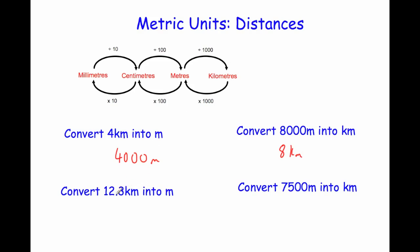Convert 12.3 kilometers into meters. We're going to times by 1000. So 12.3 times 1000 — we move the digits three places to the left — giving us 12,300 meters.